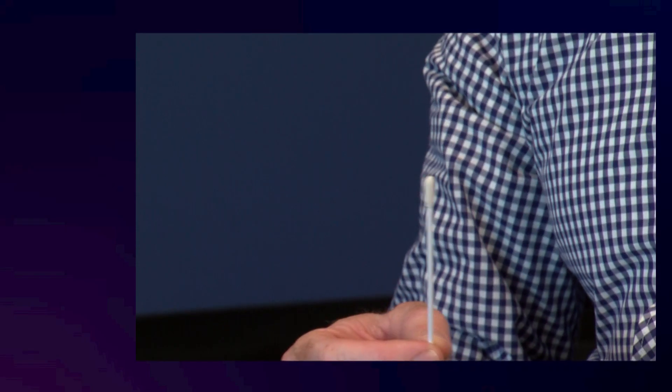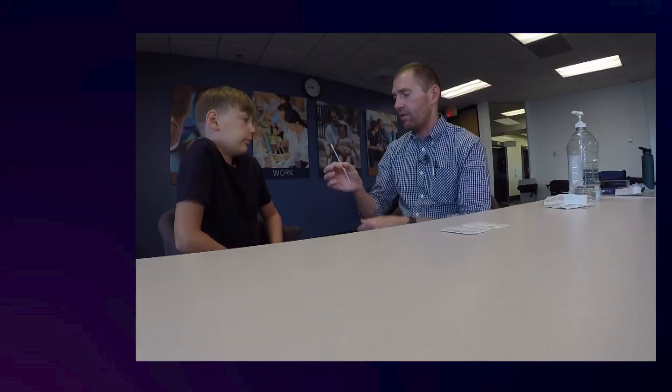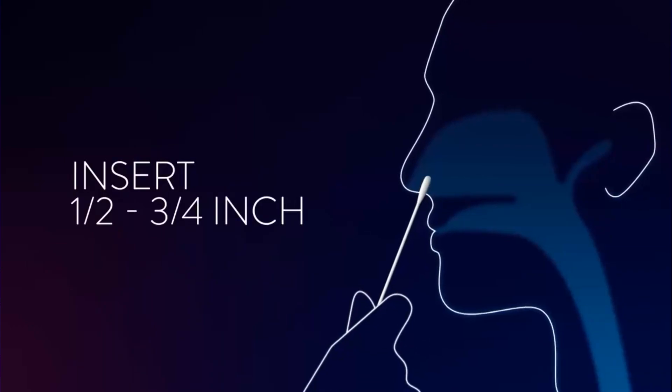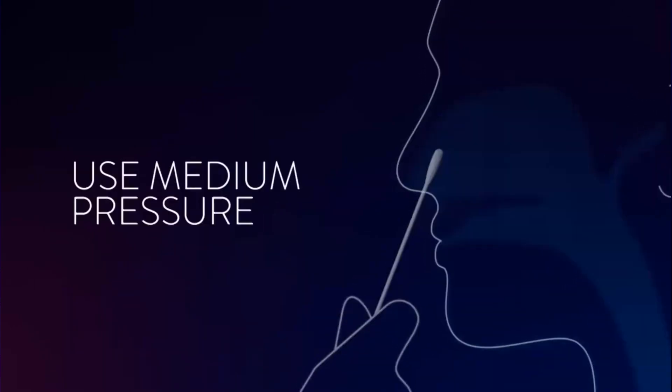We're going to insert the tip of the Q-tip just inside your nose on both sides. We're going to start here on the left side. Just inside the nose, and we're going to do a couple of circles. Just to the tip of that swab.